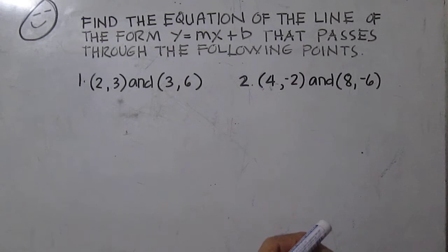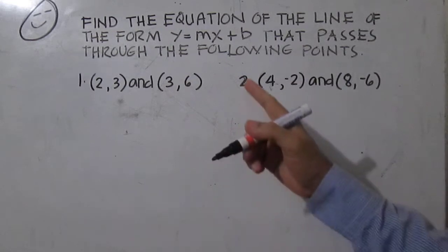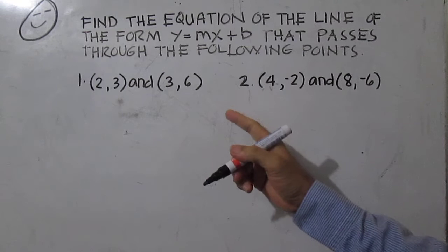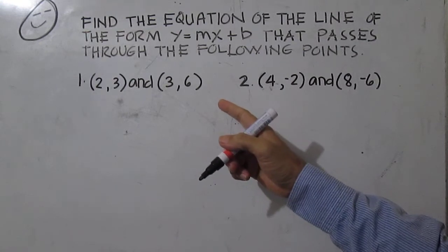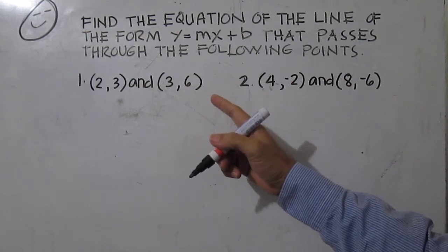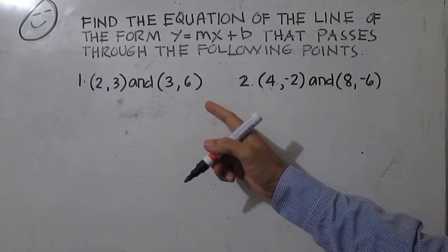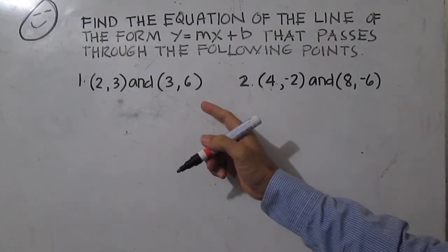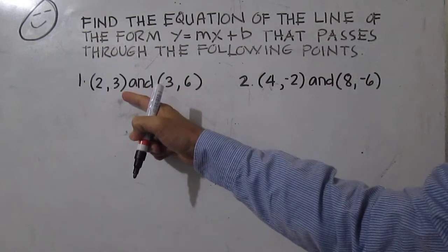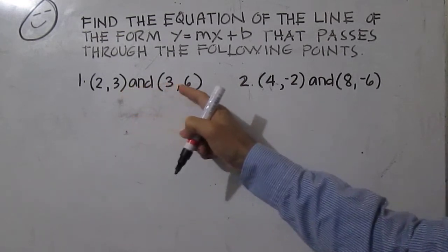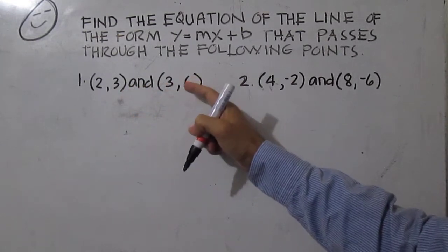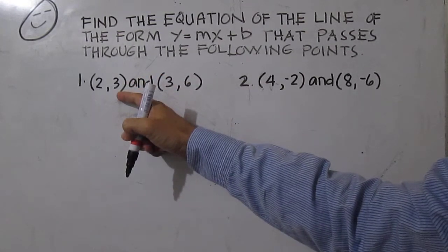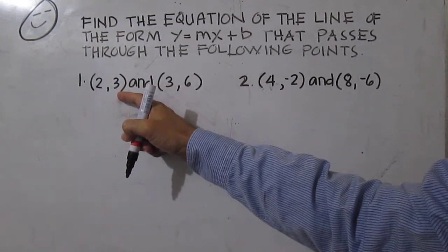Find the equation of the line of the form y equals mx plus b that passes through the following points. To find the equation, first make representations — this can be your point one and this is your point two, or this is your point one and this is point two.